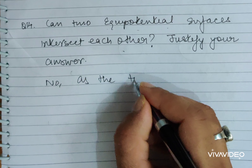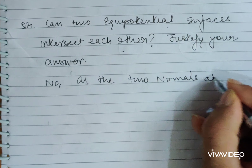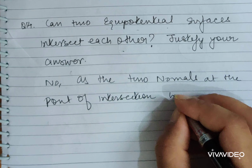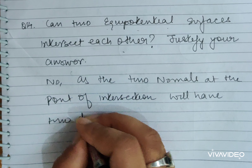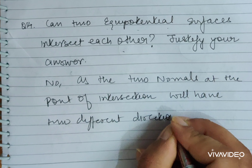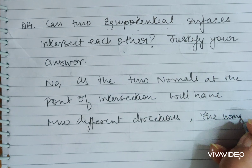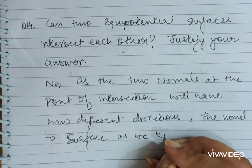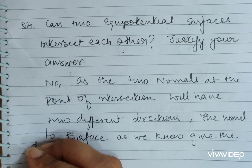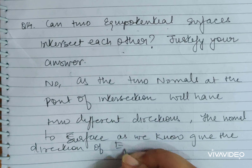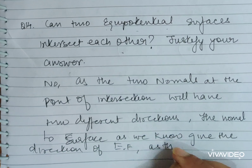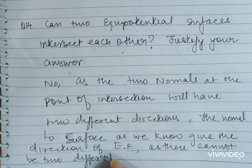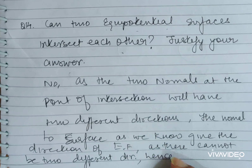As the two normals at the point of intersection will have two different directions. The normals to the surfaces, as we know, give the direction of the electric field. As there cannot be two different directions, hence it is not possible.